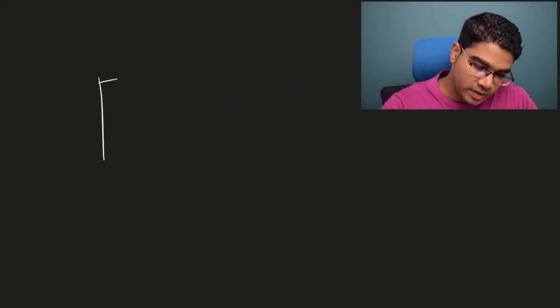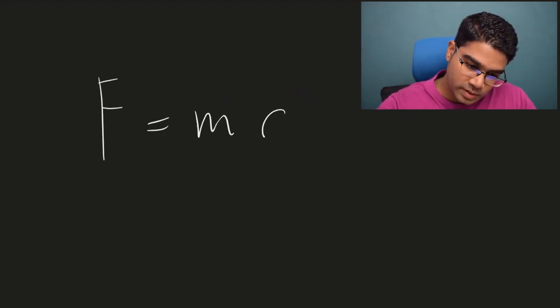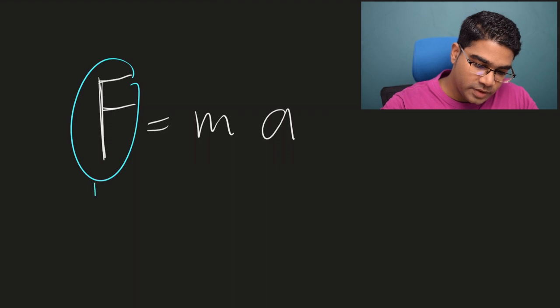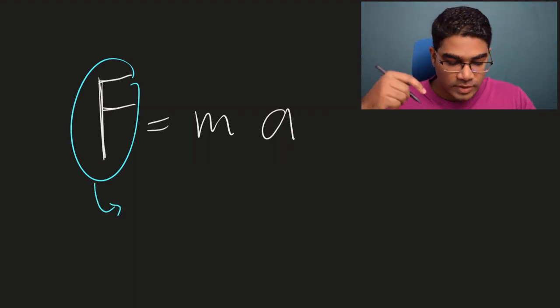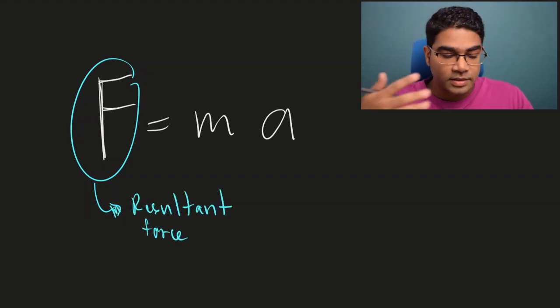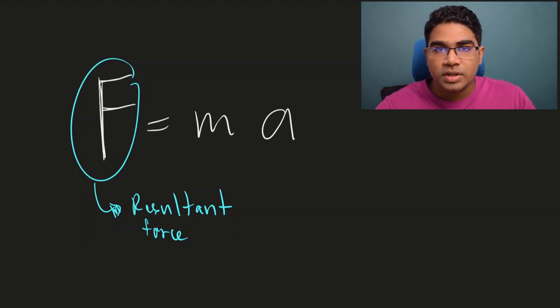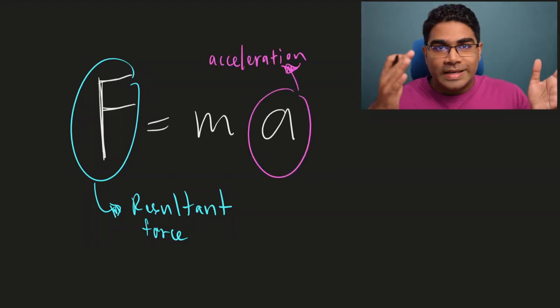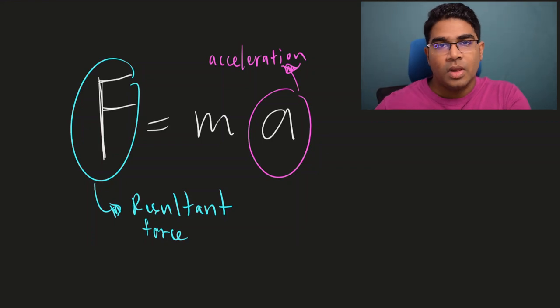First, we must understand Newton's second law: F = ma. Now, this F is very important — it is the resultant force. Newton's second law states that the resultant force acting on an object is directly proportional to its acceleration. So when there is a resultant force, there is acceleration. When the resultant force equals zero, there is no acceleration. This is the situation where forces are said to be in equilibrium — when there is no resultant force and no acceleration.